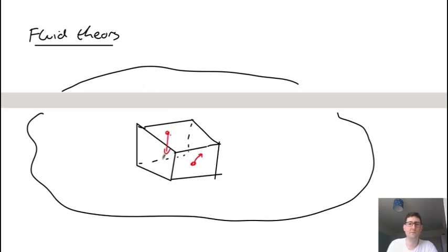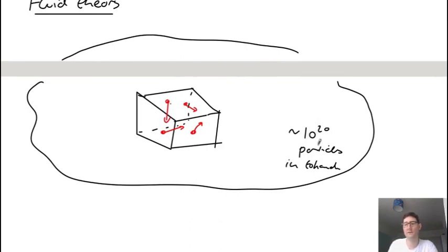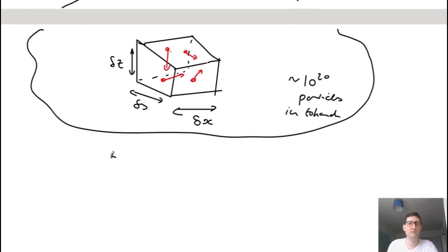In a tokamak there's a very large number of particles, so you might have 10 to the 20, 10 to 21 particles in a tokamak. That kind of ballpark because the densities are 10 to 19, 10 to 20 per cubic meter, and there are several cubic meters of plasma, obviously larger in bigger machines. We have a very large number of particles. We take a small box, and this is some delta x, delta y, and delta z. Inside this box you have lots of different particles moving in different directions.